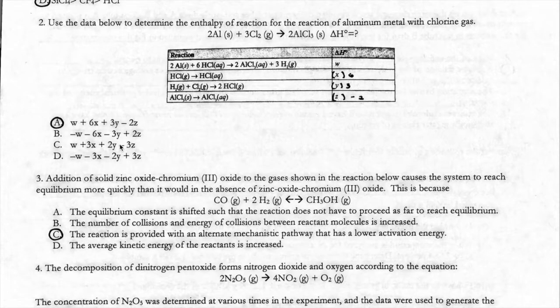In two, it says use the data below to determine the enthalpy of reaction for the reaction of aluminum metal with chlorine gas. So I need to take these four reactions and somehow get this. And so what I do is I look at this, I'm looking for major players. So I've got two aluminums here, so I'm going to keep this as it is. Then I have Cl2, so when I look at Cl2, it needs to be a gas. So when I look through these, I've got Cl2 right here, except I only have one Cl2. So I'm going to multiply this whole thing by three in order to get three Cl2s.